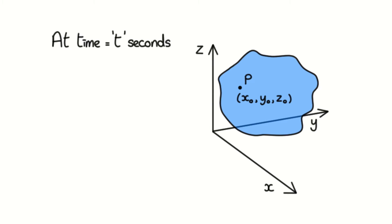Let's say we have the same three-dimensional blob of fluid, at an arbitrary time t seconds. Point P is in the fluid, which has arbitrary coordinates x0, y0, and z0, in a three-dimensional reference frame. How would we calculate the density of the fluid at P?